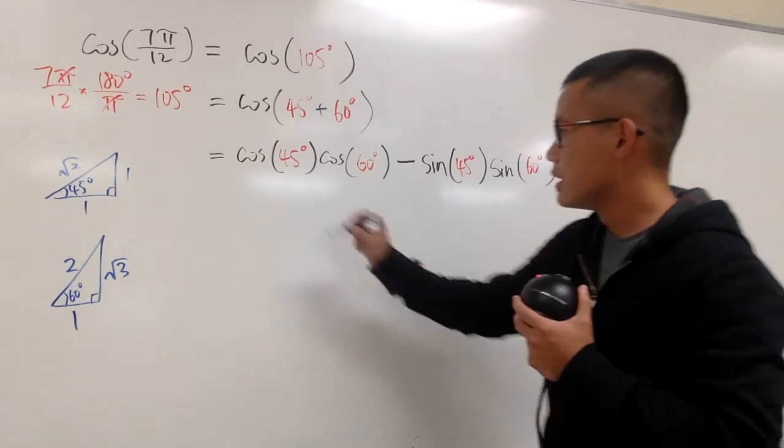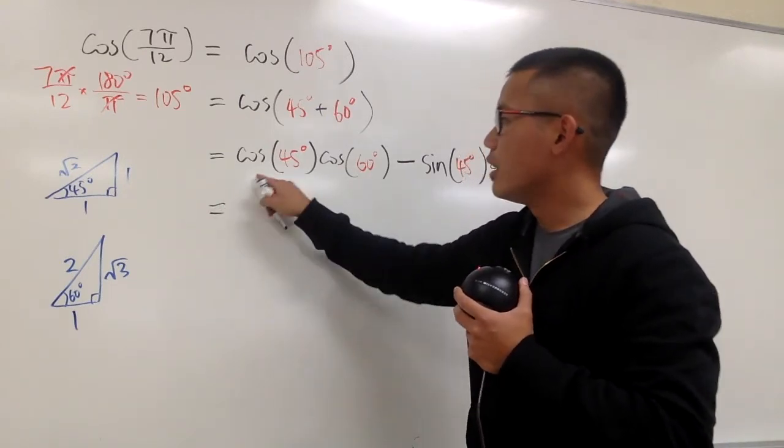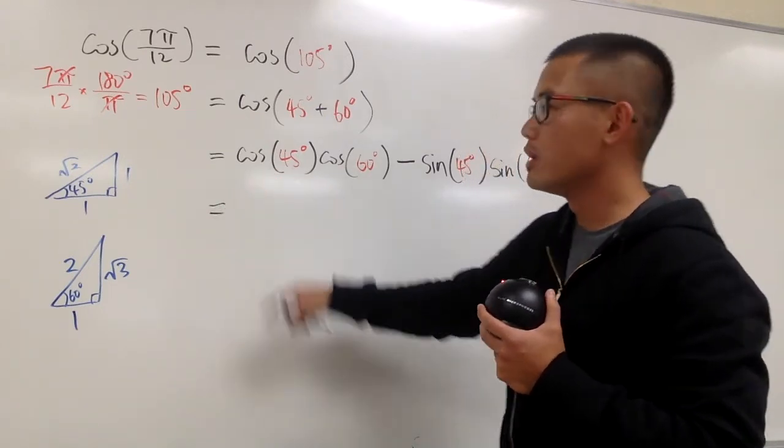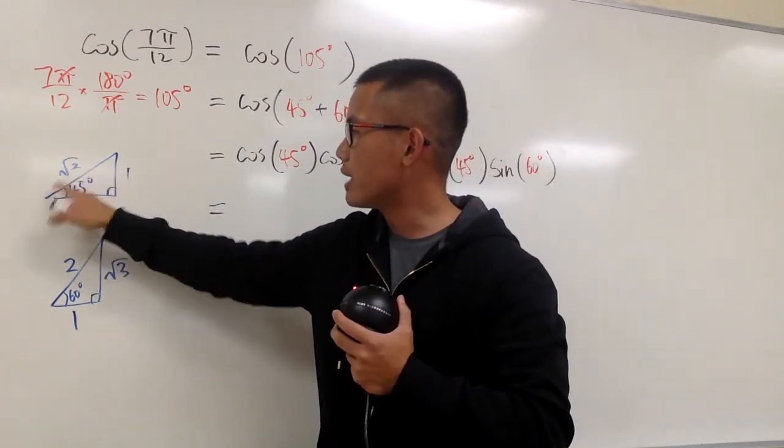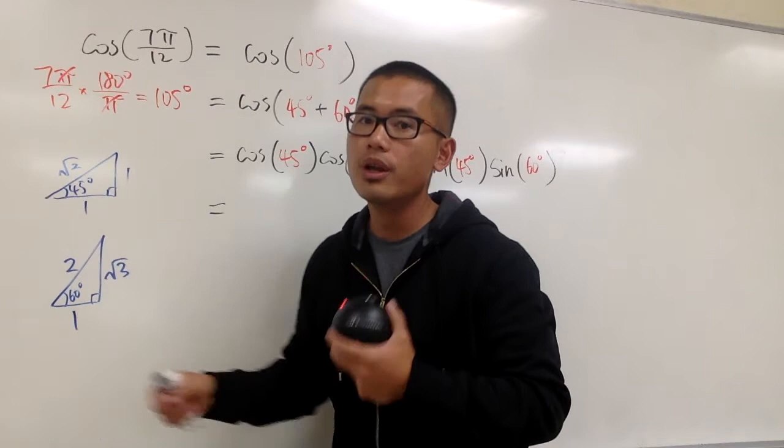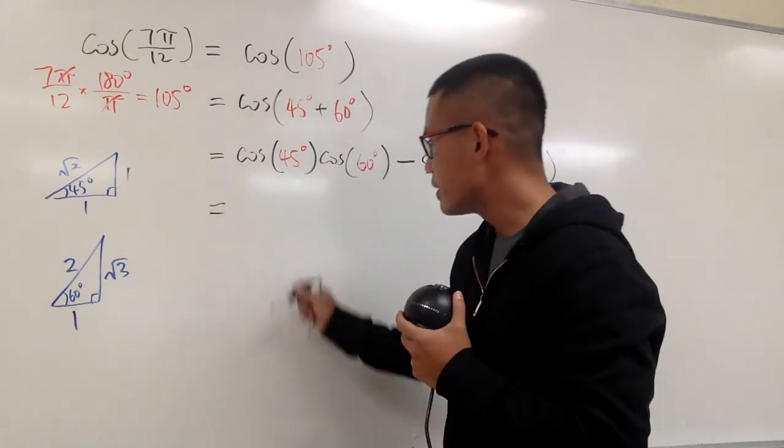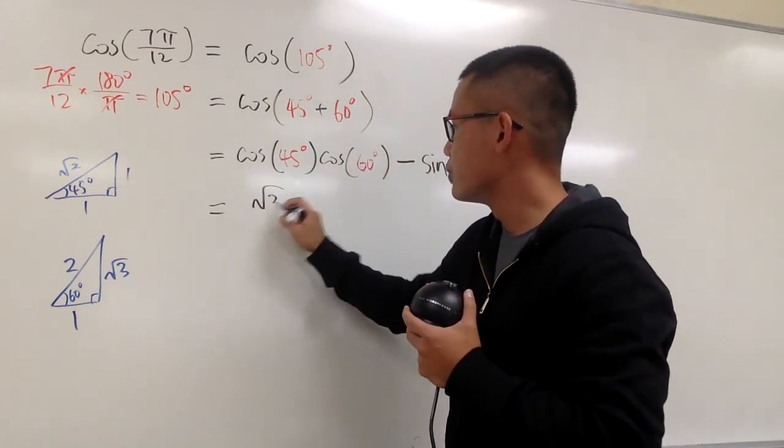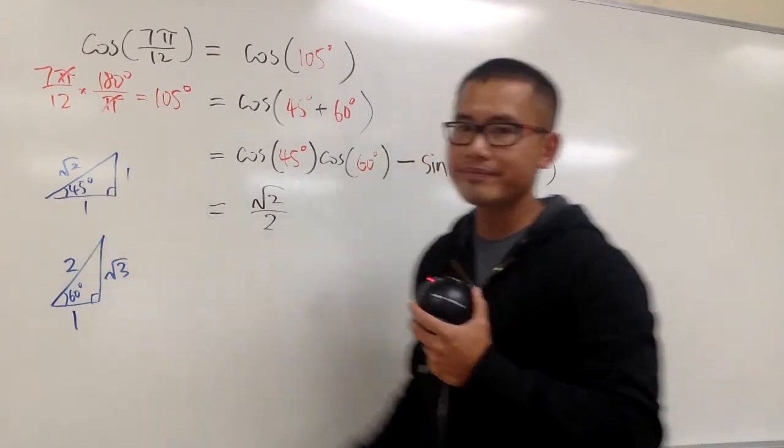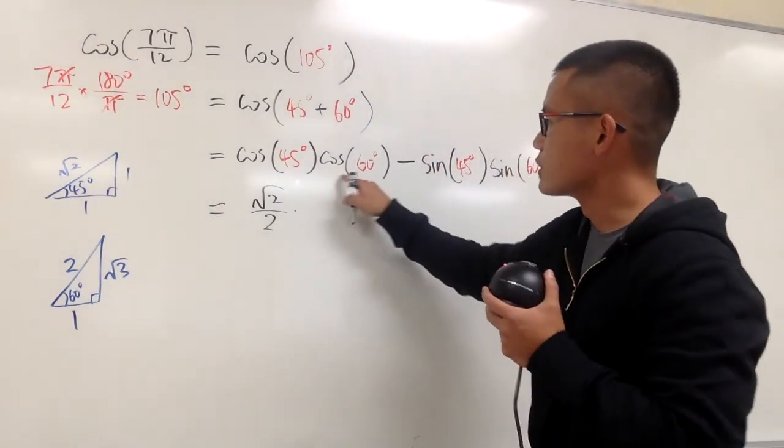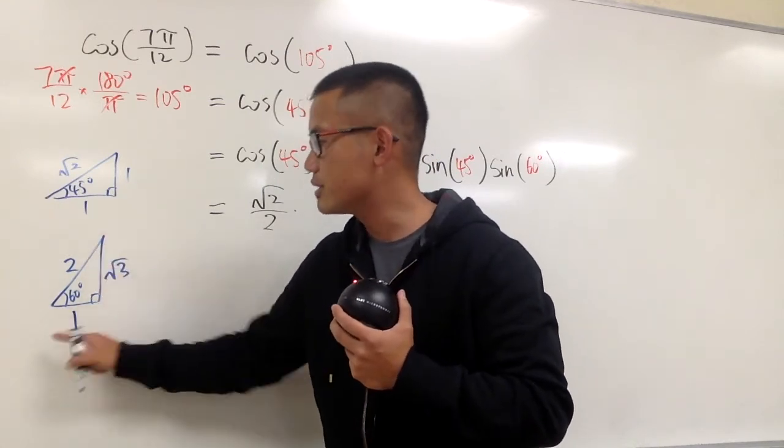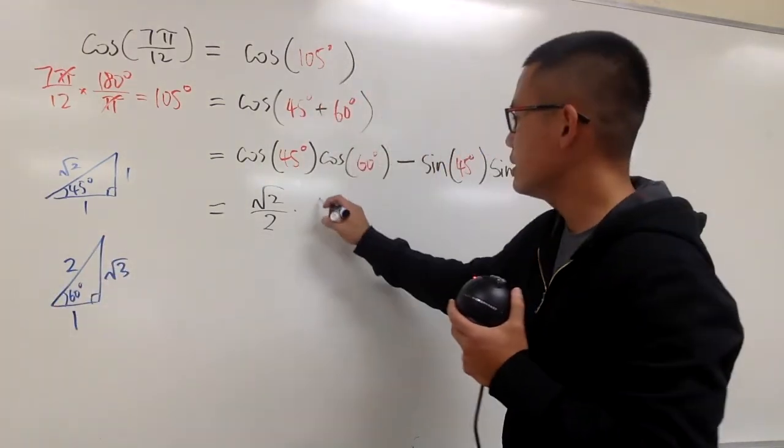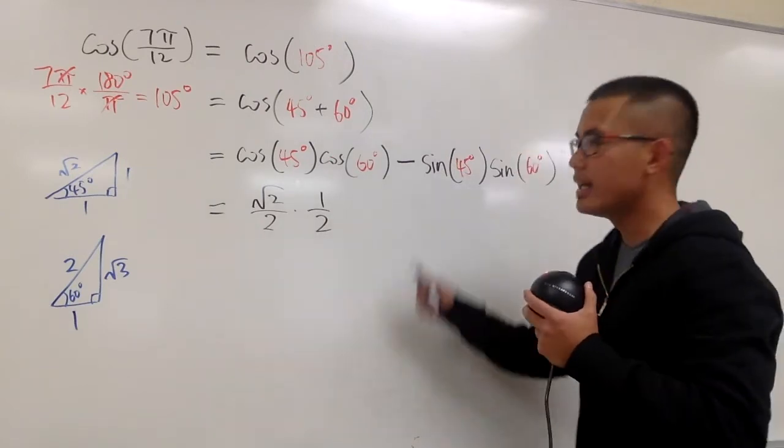So now we'll see cosine of 45. Look at this triangle. Cosine is adjacent over hypotenuse. 1 over square root 2. Namely, we can rationalize the denominator, and we'll end up with square root of 2 over 2, right? Right here. Times cosine of 60. Look at this. Cosine is adjacent over hypotenuse. So 1 over 2, right?